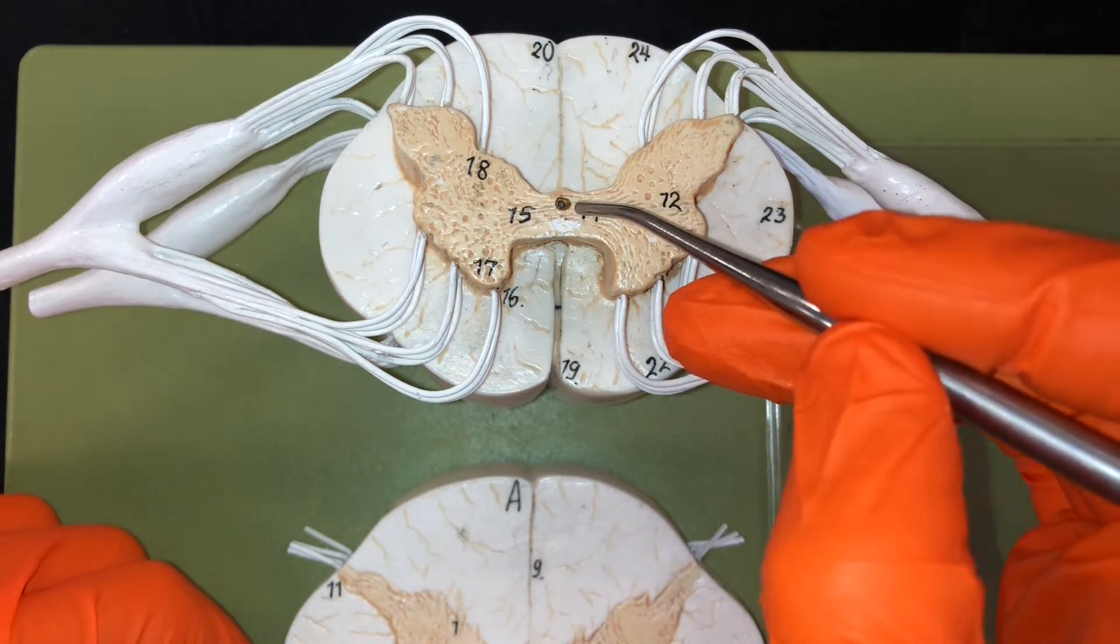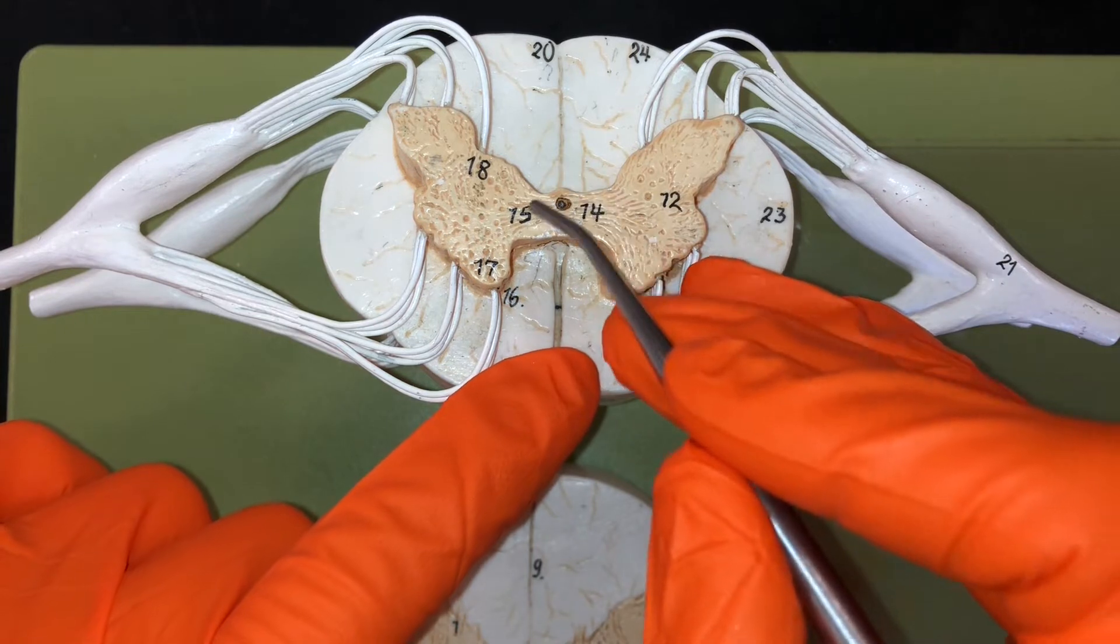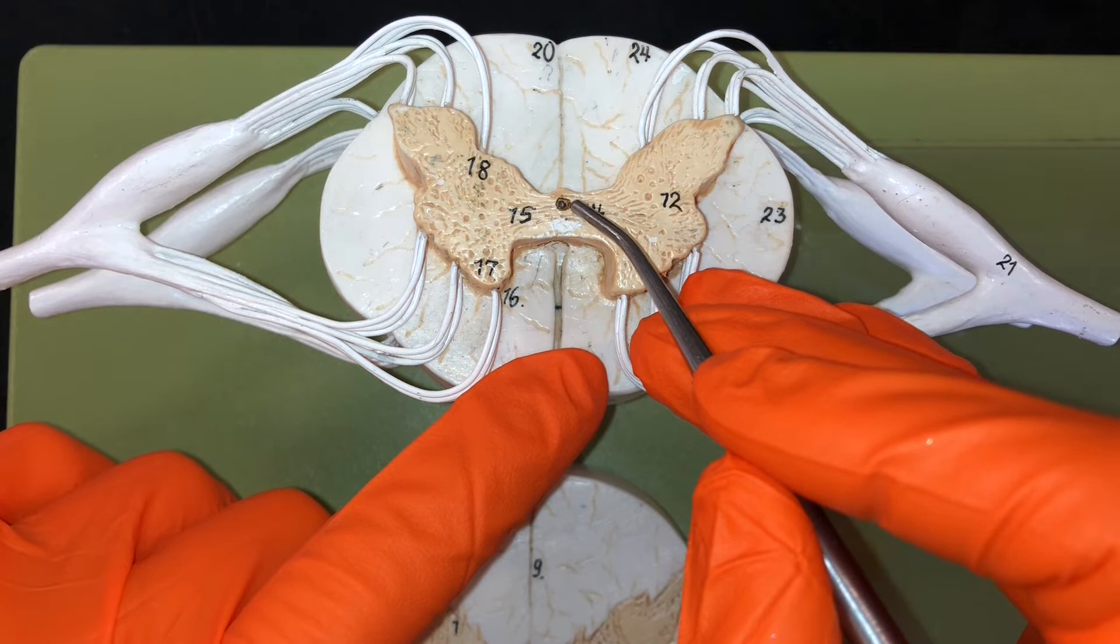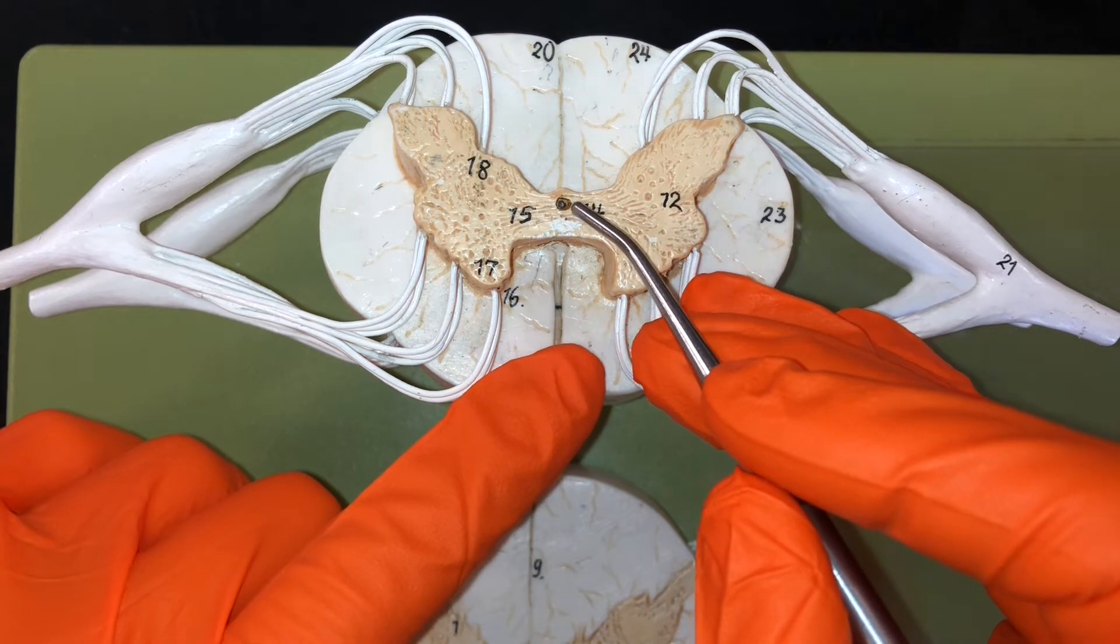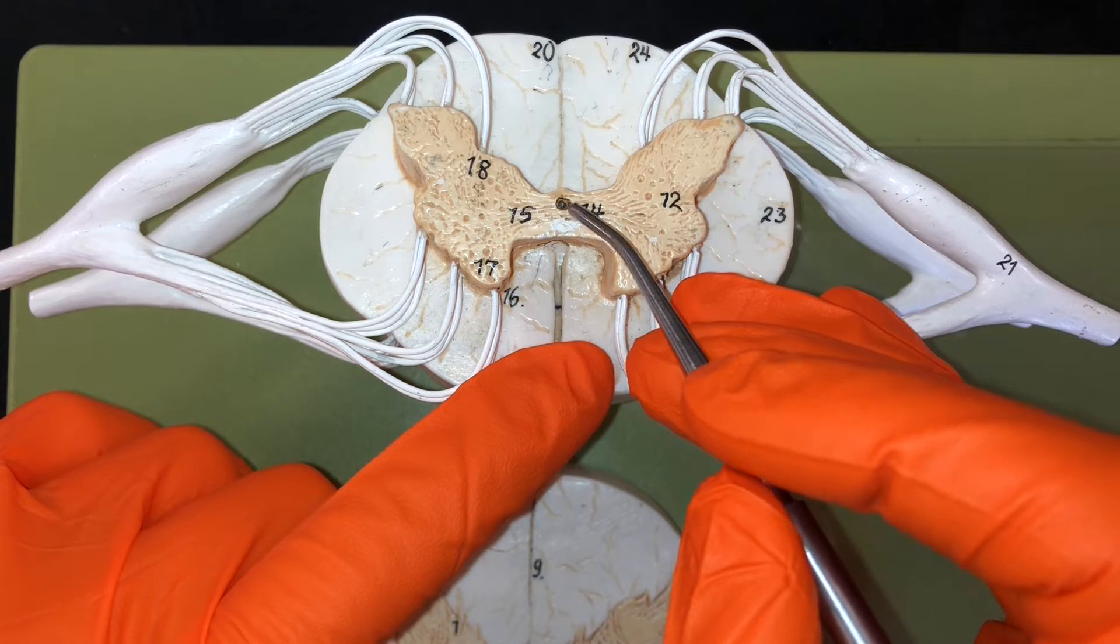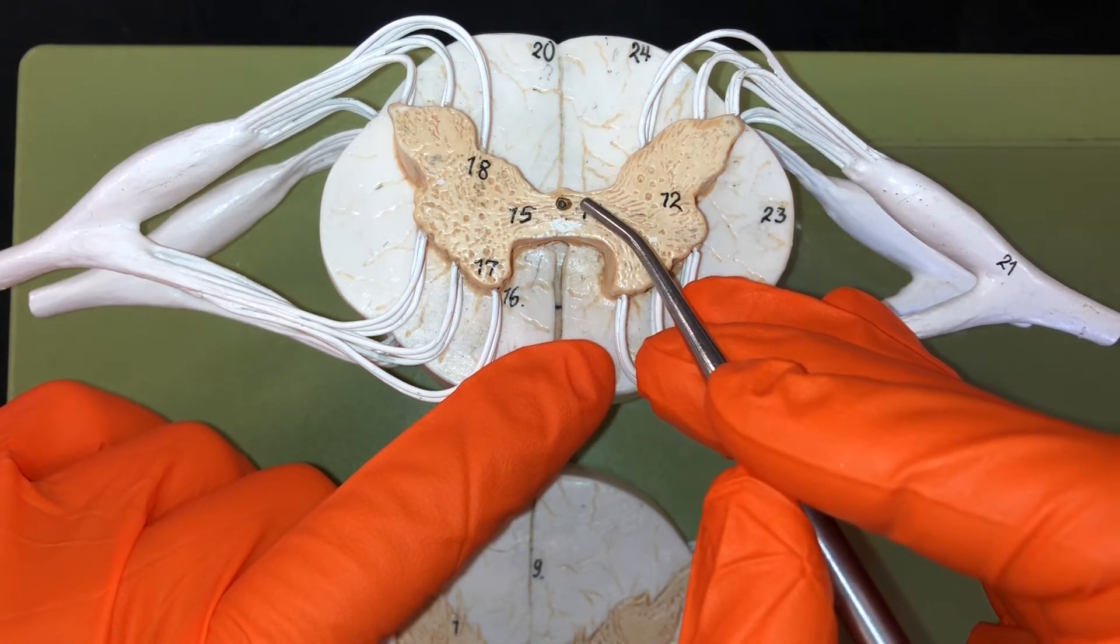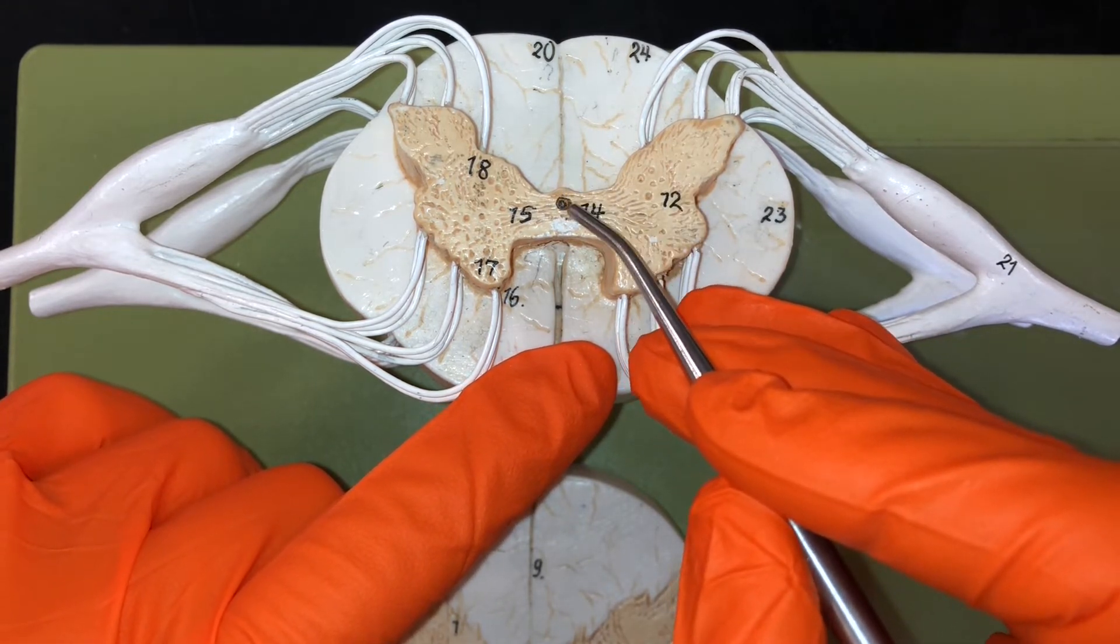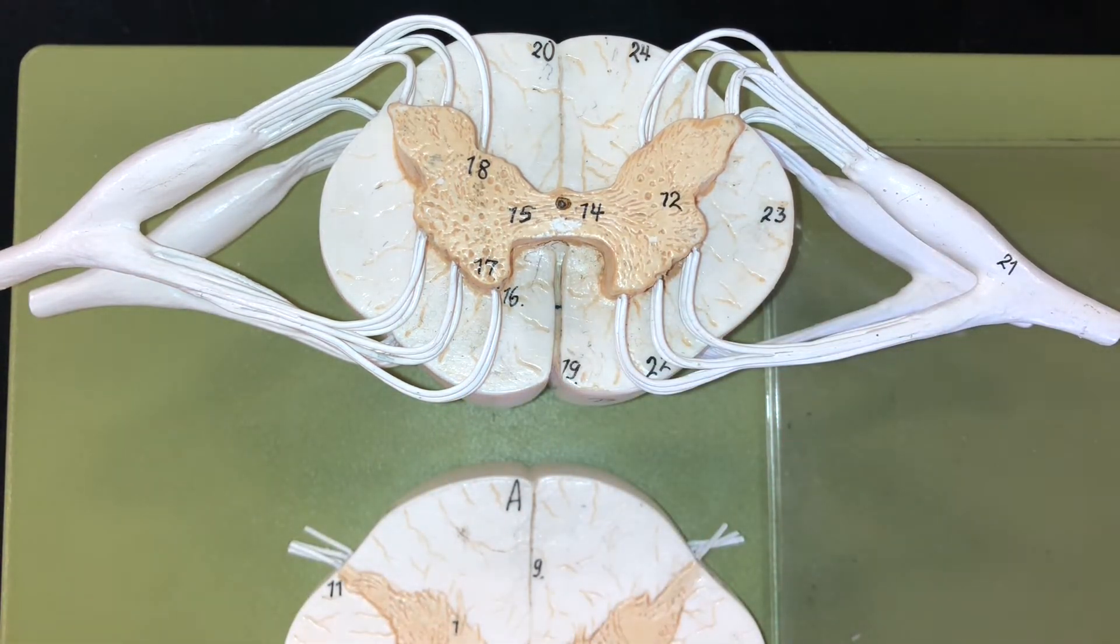Right here in the center of the gray matter is this opening within this area called the gray commissure and that is the central canal. The central canal actually comes from the fourth ventricle up in the brain. The reason why we want to remember that is because we have cerebrospinal fluid flowing through that central canal. So make sure you know where that is because it can also help determine other portions you're looking at on the spinal cord.